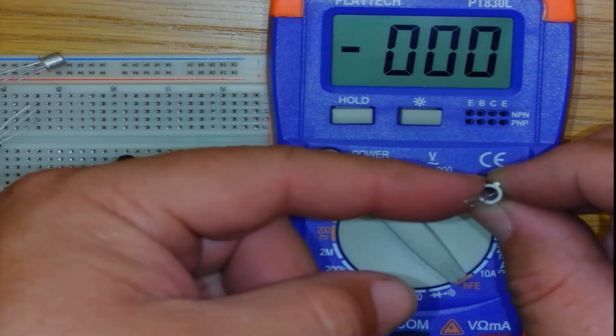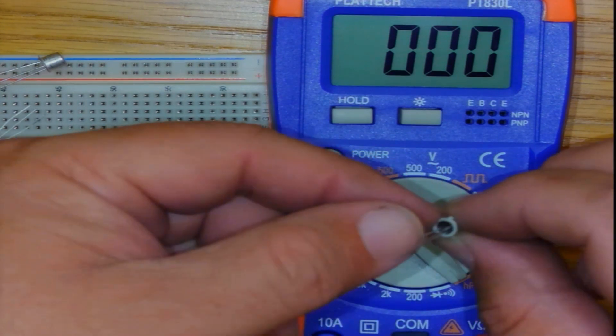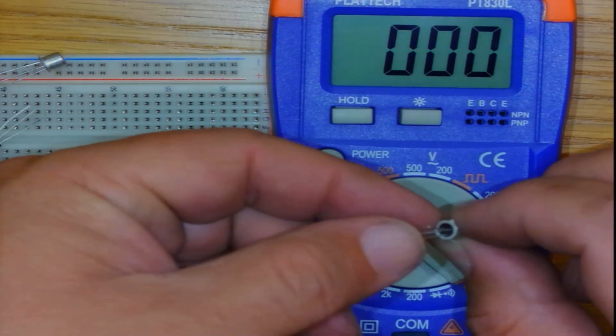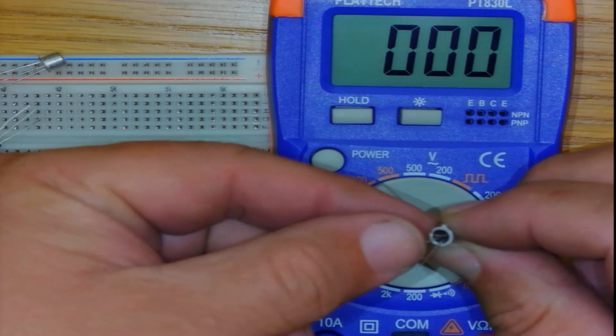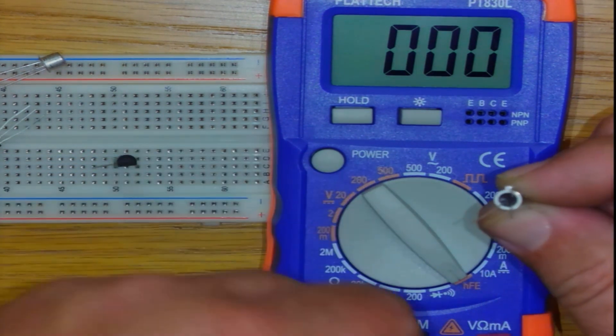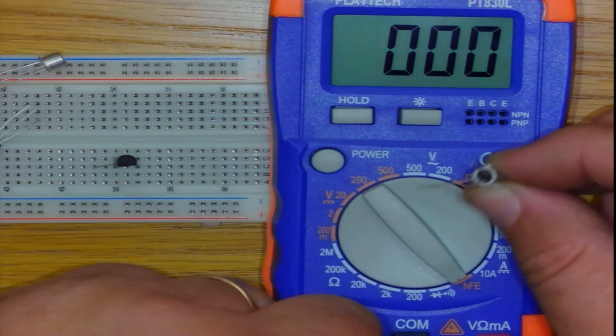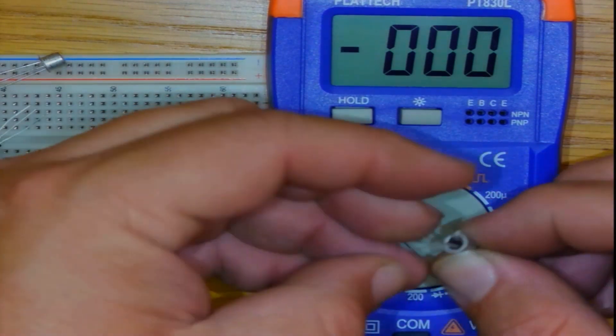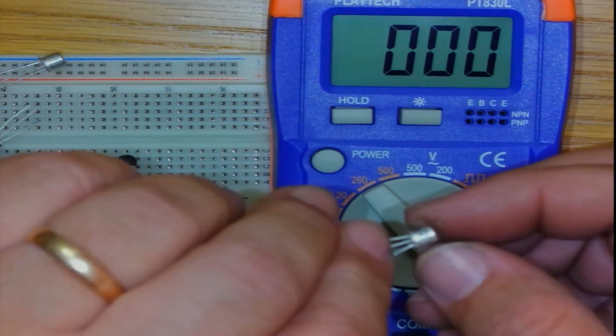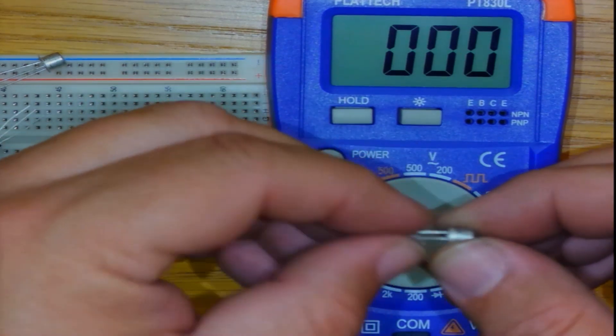And usually the leg closest to the index is the emitter. The one in the middle is the base, and the one on the side opposite of the tag is the collector. So we can prove it. This one is a BC107, a very standard transistor as well.